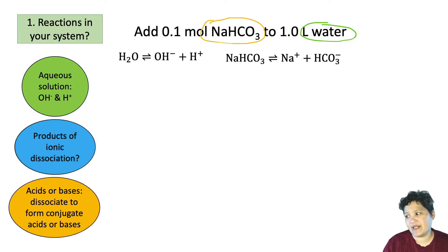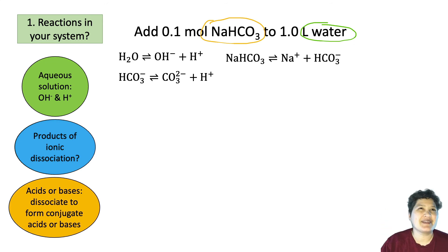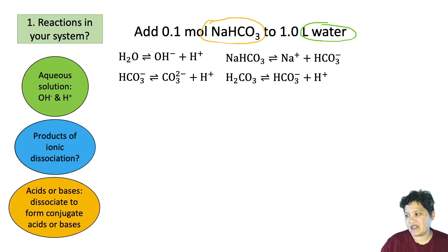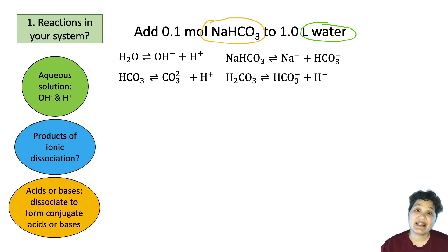Now notice: bicarbonate has a proton that can dissociate. We can have an acid dissociation reaction where bicarbonate loses its proton to form carbonate. But bicarbonate is also the conjugate base of carbonic acid, so we also have the possibility of bicarbonate grabbing a proton from water to make carbonic acid. So we have four possible reactions — this is definitely a more complicated system.